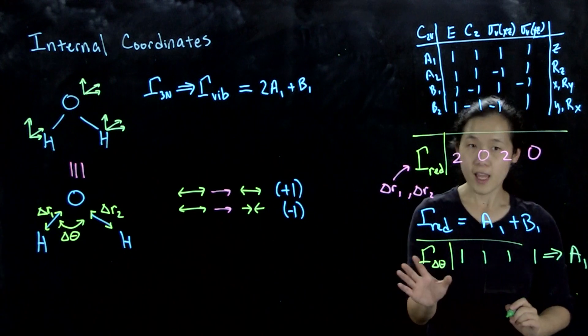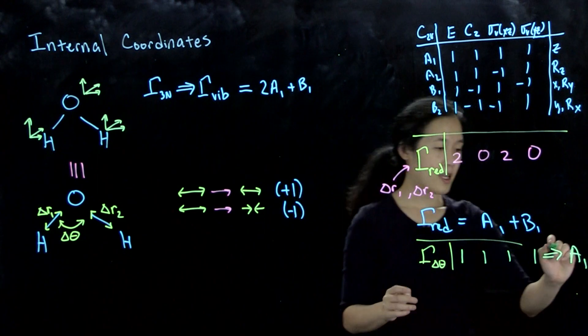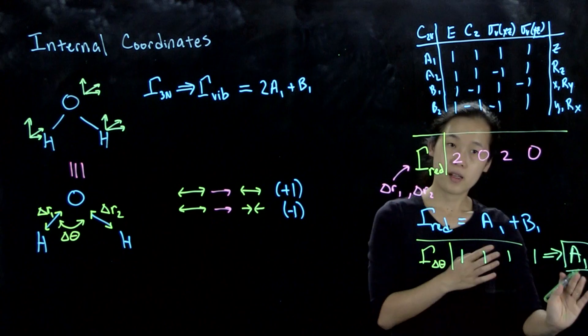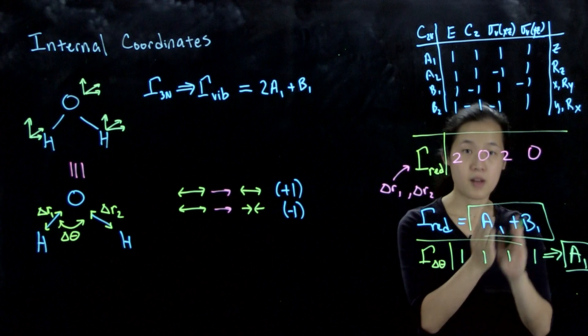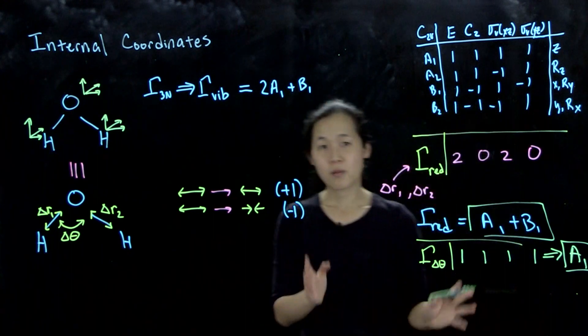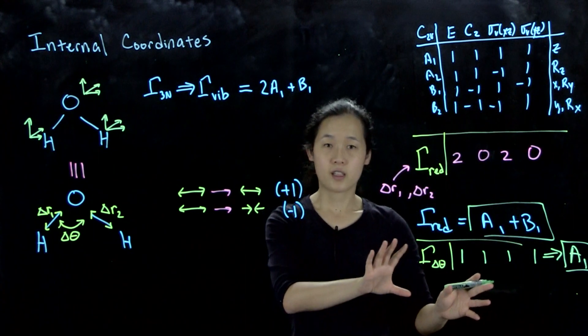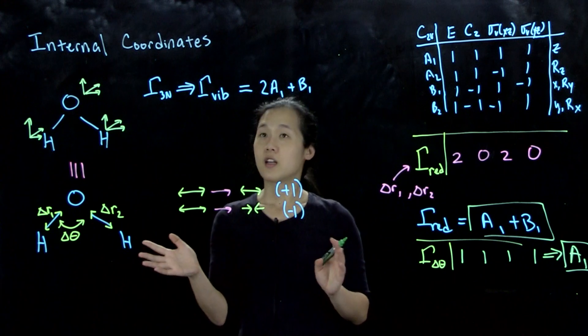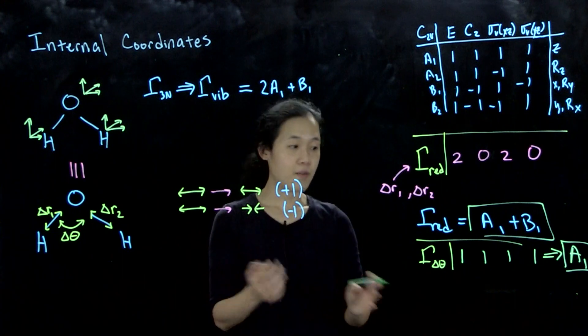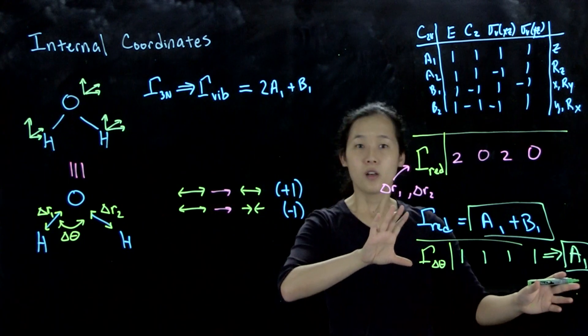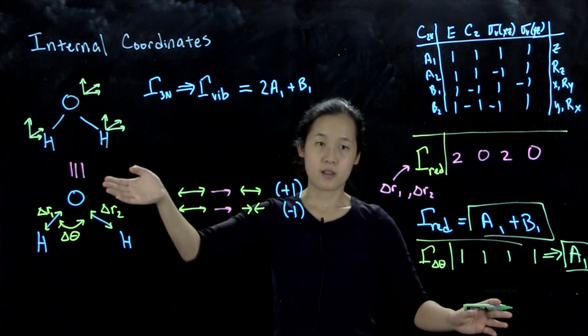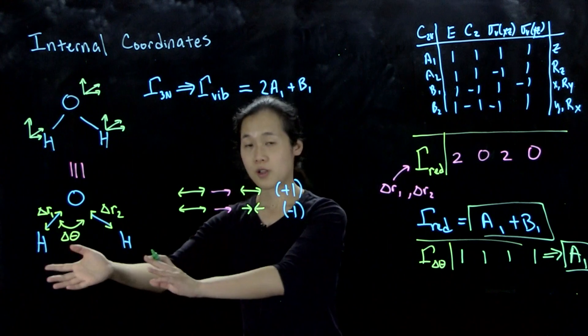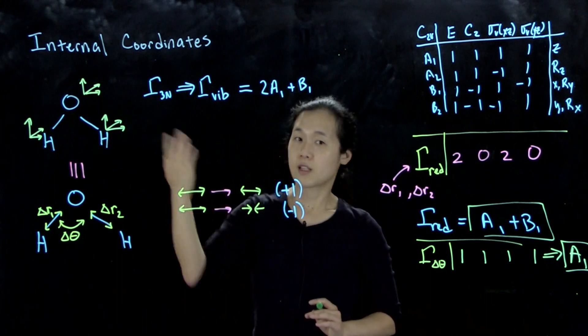What we're saying is we have an A1 bending mode. For OH bond stretching, we have an A1 mode and a B1 mode. We should be able to visualize what these look like using a different technique. But you can see that we found all three of the vibrational modes that we got from this XYZ treatment using this internal coordinate system.